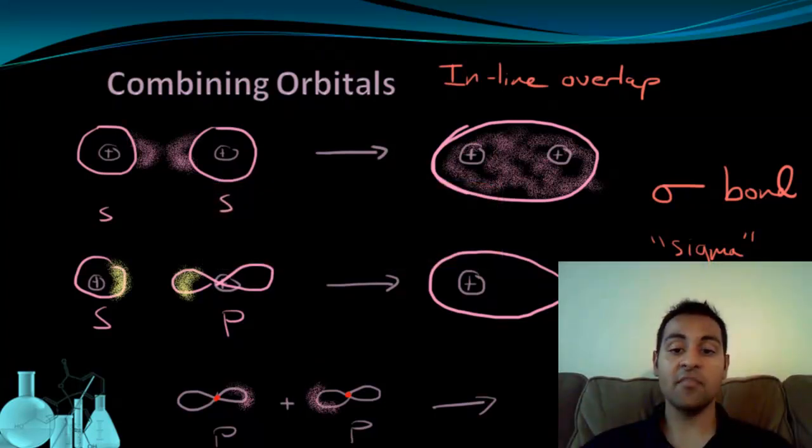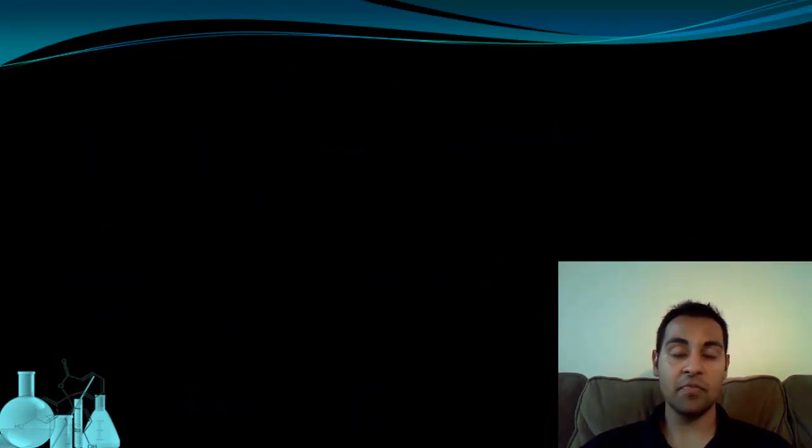So the question is, what kind of molecular bonding or molecular orbitals are created when we have multiple bonds in the molecule? Because we know that all single bonds are simply sigma.